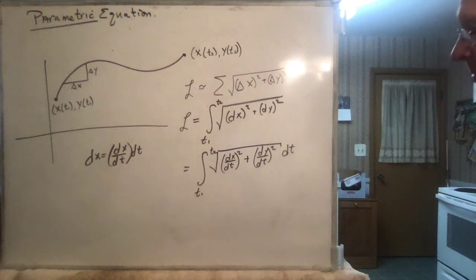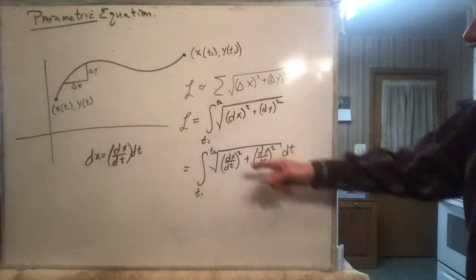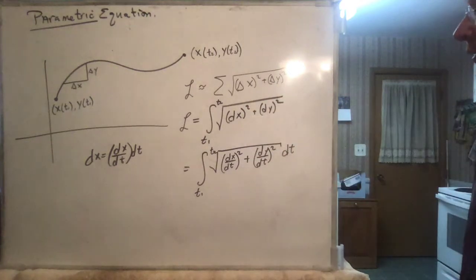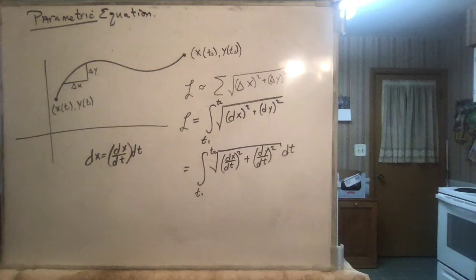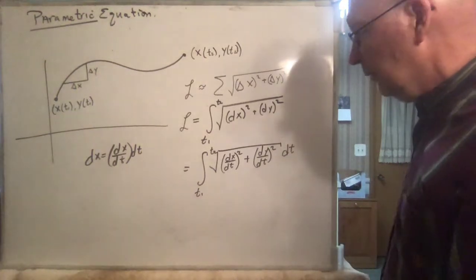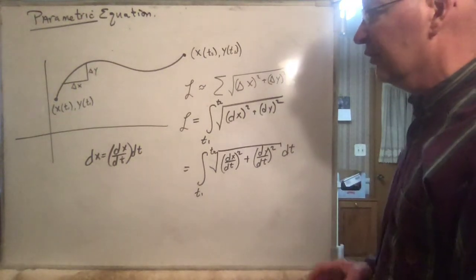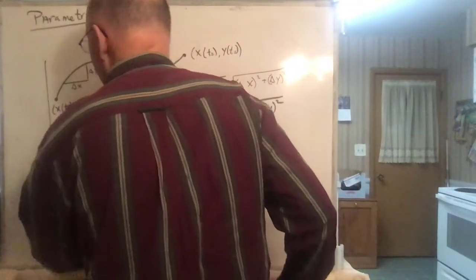I'll let you show that the length of a circle using this formula is 2πR — go ahead and do that and you'll get your answer. That's the length of a circle, but I want to do one a lot more interesting than that.